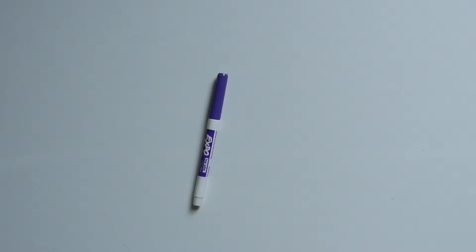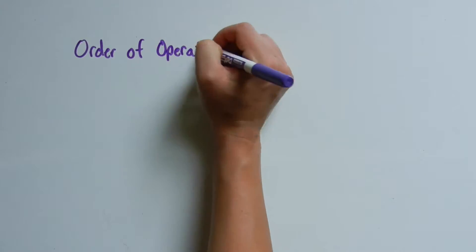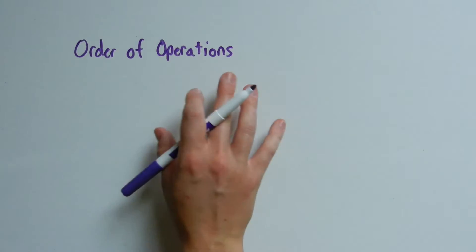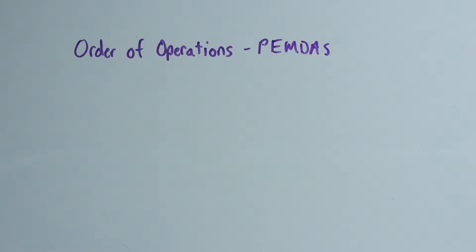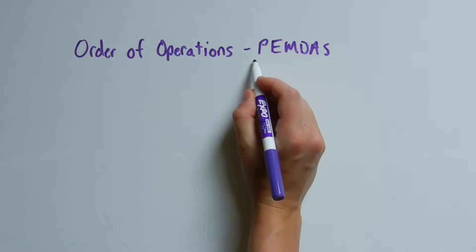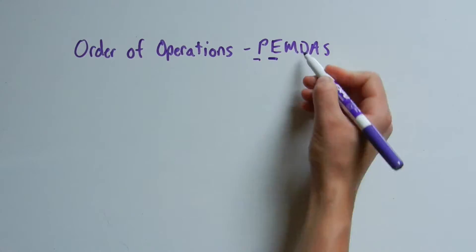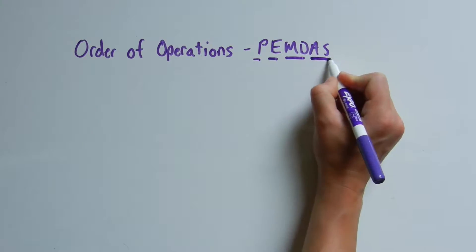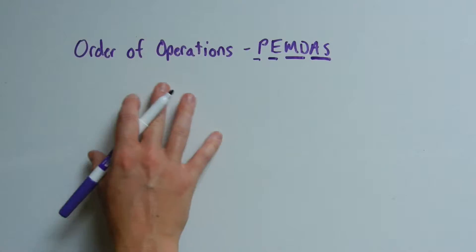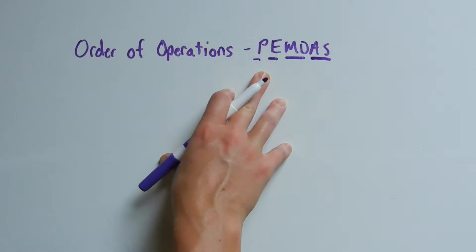In this next video we're going to continue reviewing and go over evaluating expressions, but before we jump into that let's go over order of operations again. When you hear order of operations, think PEMDAS. Remember: Parentheses, Exponents, Multiplication and Division, and then Addition and Subtraction. That is the order that you complete operations.